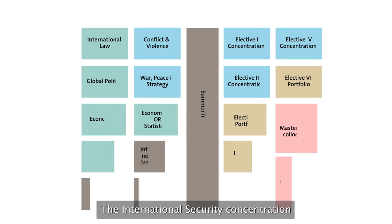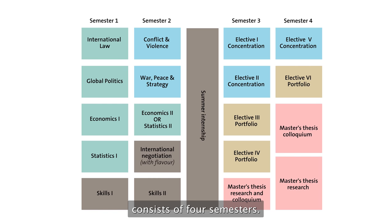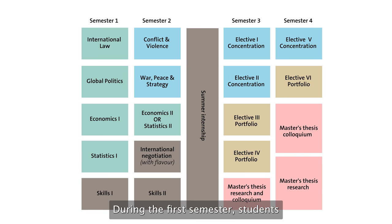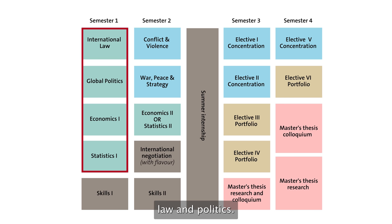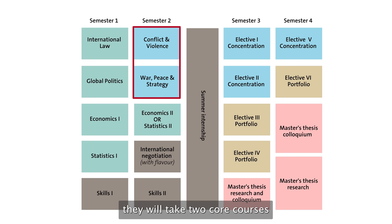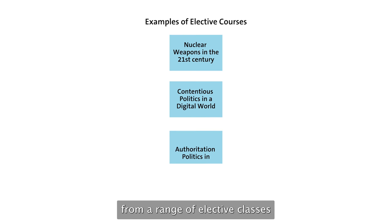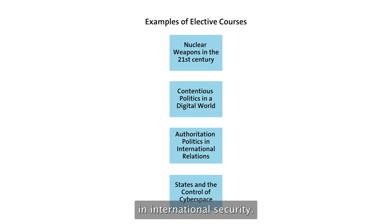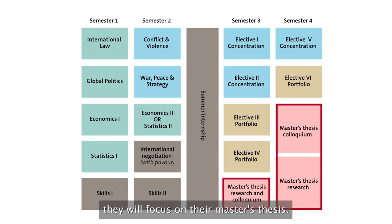The International Security Concentration of the Master in International Affairs consists of four semesters. During the first semester, students will take a range of core courses in economics, statistics, law and politics. During the second semester, they will take two core courses in International Security. During the third semester, they will be able to choose from a range of elective classes in International Security. And during the fourth semester, they will focus on their master thesis.